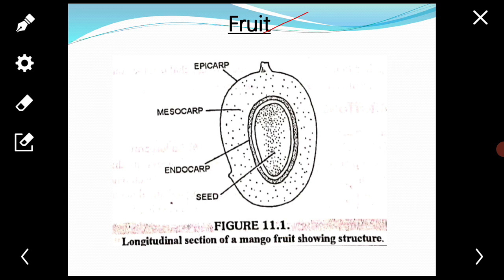The pericarp consists of three layers: outer epicarp, middle mesocarp, and inner endocarp. This is the structure or longitudinal section of a mango fruit showing the different parts. The outer thin skin is the epicarp. The sweet, juicy and edible flesh is the mesocarp. And the innermost hard covering of the seed is the endocarp. These three layers are not easily distinguishable in dry fruits.